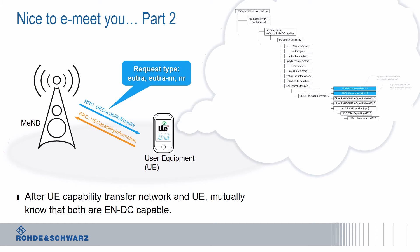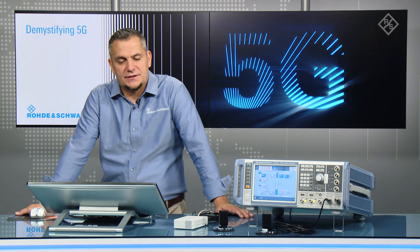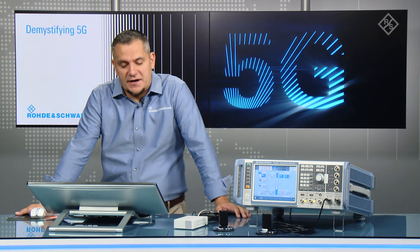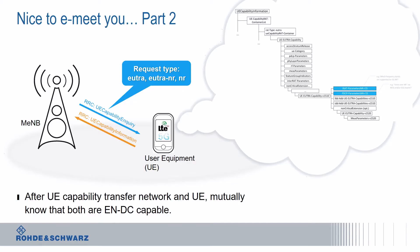Over the established LTE connection, the network sends an RRC message — a Radio Resource Control message — the UE Capability Inquiry. Several request types are possible: EUTRA stands for LTE, and the network will also want to know the LTE capabilities of the device. But it will also set it to NR to understand what NR capabilities the device has. The mobile responds in the uplink with its UE Capability Information. With Release 15, there is a EUTRA capability version 1510, and highlighted here, certain information is delivered — most importantly the IRAT parameters.